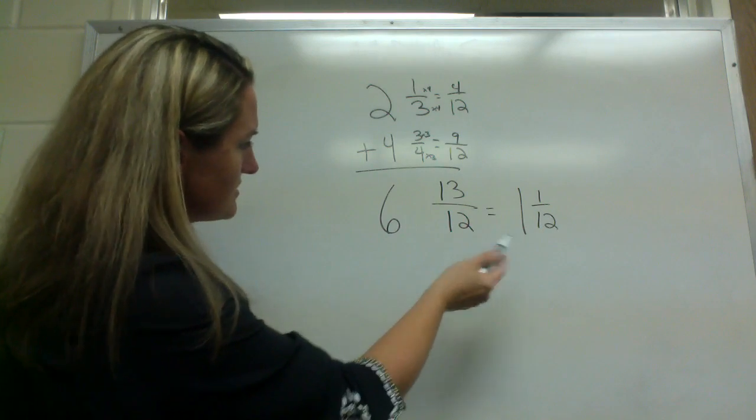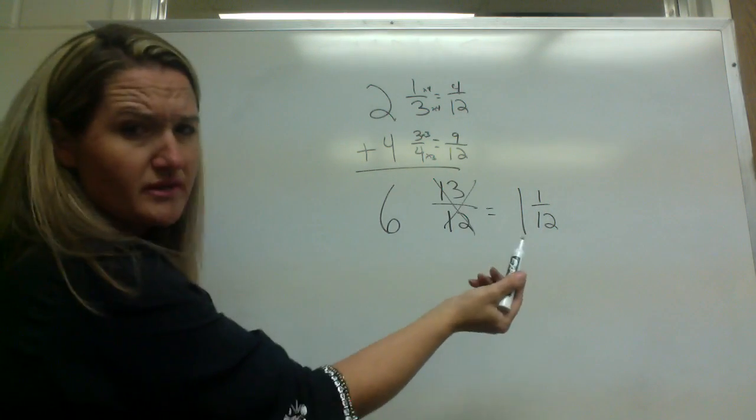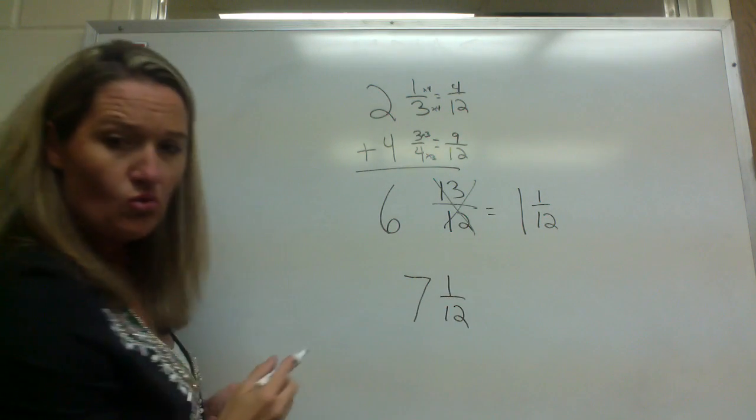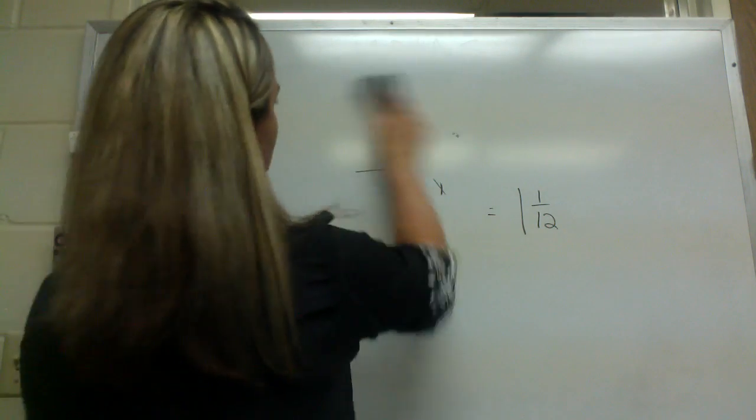So now we've got six here and then the one twelfth. So let's go ahead and just combine our wholes. Seven and one twelfth is our answer. All right, let's do another one.